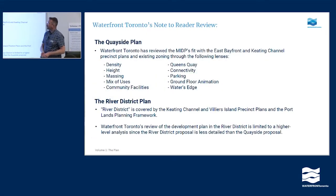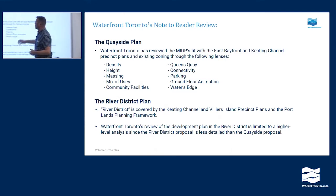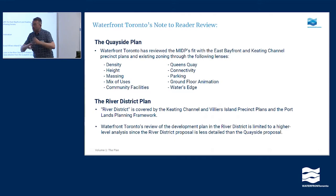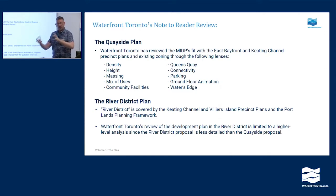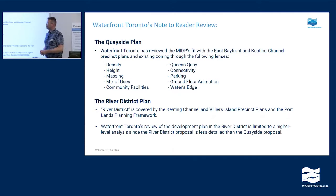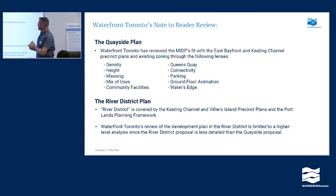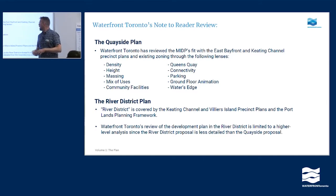In terms of Waterfront Toronto's review, we're going to look at the density of the proposal against what the density was in the precinct plan, the heights and massing of the buildings, the mix of uses — ensuring at least 75% residential and 25% non-residential — and the community facilities proposed. We're also going to be looking at Queens Quay in relation to the transit extension and the Queens Quay environmental assessment, connectivity through the site, parking, how the ground floor is animated, and how the water's edge promenade continues through the site.